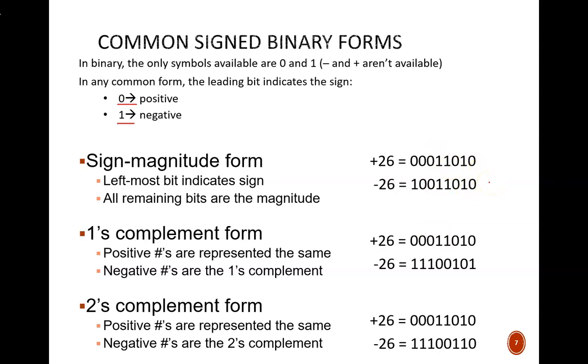Where did this binary code for positive 26 come from? Well, you can apply the repeated divide by two method to find that 26 in unsigned binary is 11010. Then to represent positive 26 in a signed form, we first need to know the number of bits in the scheme. Here we are assuming eight bits. Then we take the unsigned result and pad zeros on the left side until we reach eight bits. Note that positive 26 is written the same in all of these binary forms.